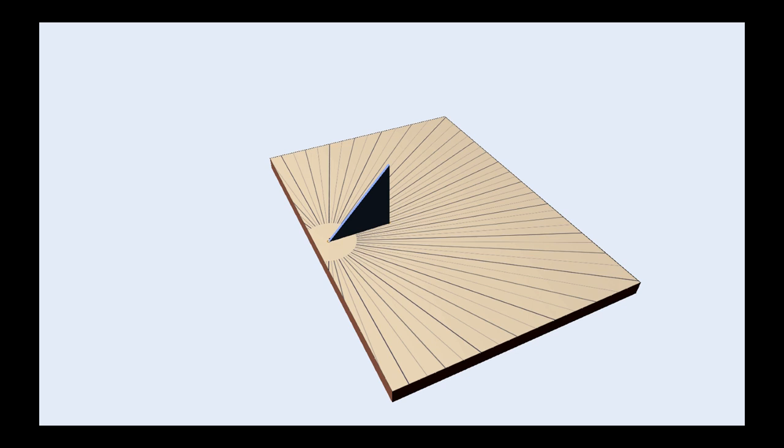A horizontal sundial is drawn on a horizontal plate. It has a style that casts a shadow on the sundial. This style is aligned with the north-south axis and its edge points to the celestial pole. In the northern hemisphere, it points to the north pole, near Polaris.